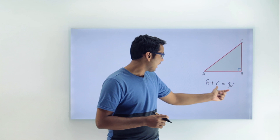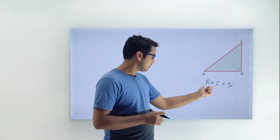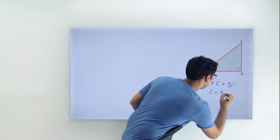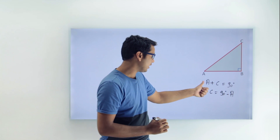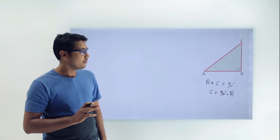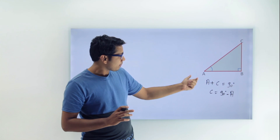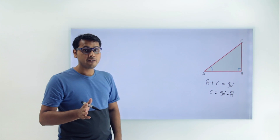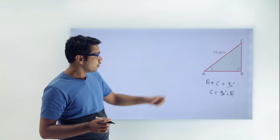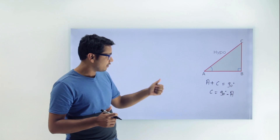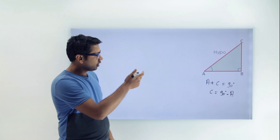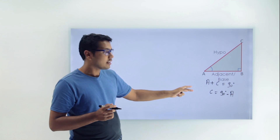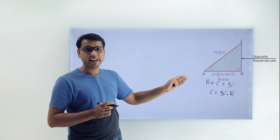We can write that angle C equals 90 degrees minus A. Now, considering angle A in the triangle — the side opposite to the right angle is always the hypotenuse, so AC is our hypotenuse. The side near to the given angle is the adjacent side, so AB is our adjacent or base, and BC is our perpendicular or opposite side.